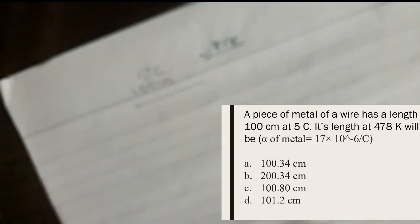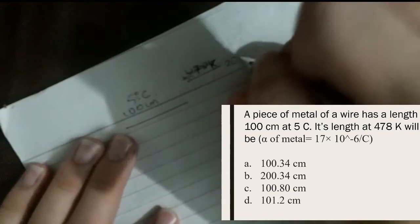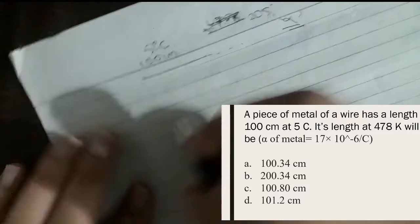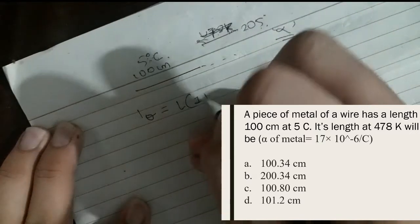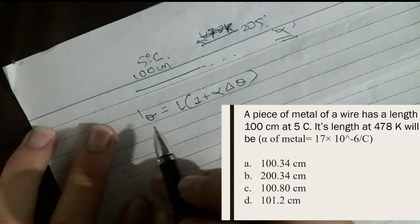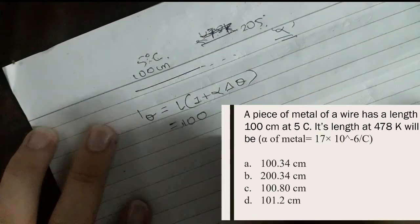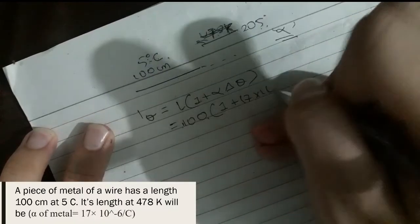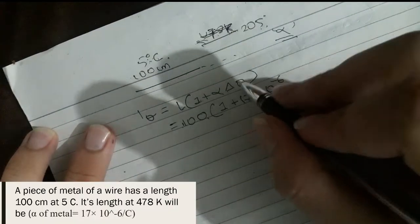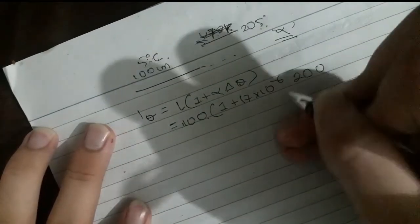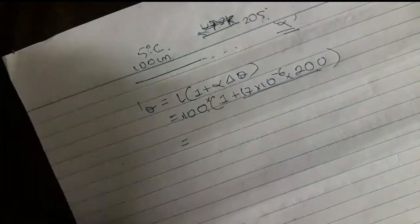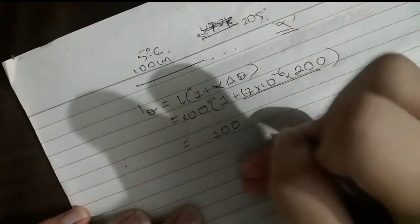The temperature change is 205 minus 5 equals 200 degrees. Using the formula L-theta = L(1 + alpha·delta-theta): L-theta = 100 × (1 + 17×10⁻⁶ × 200). Multiply it out. The final answer is 100.34 centimeters.